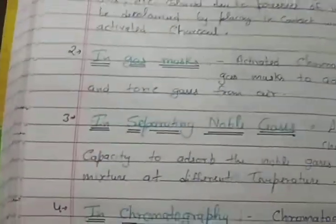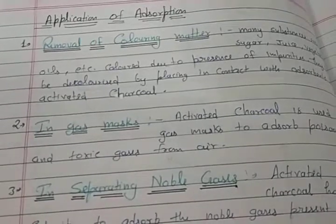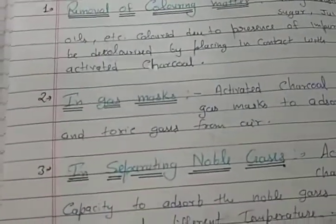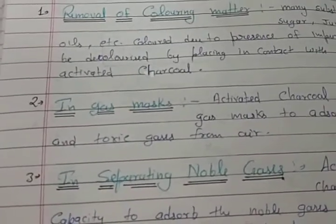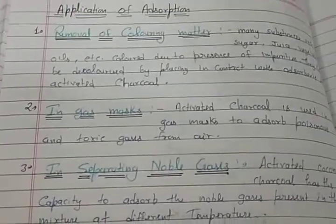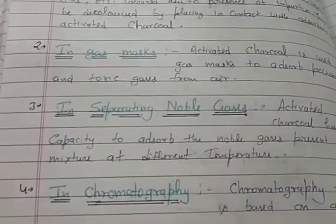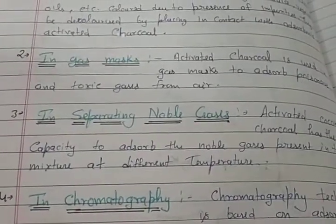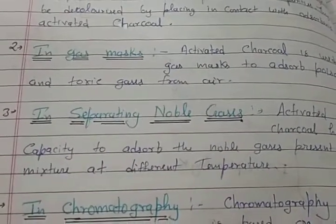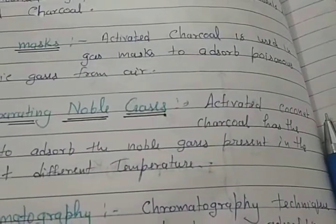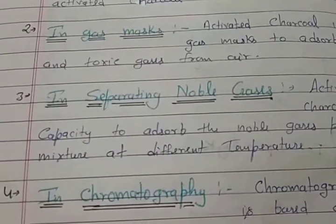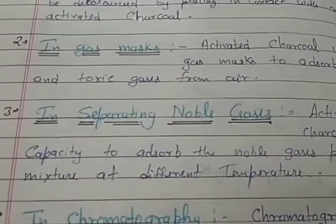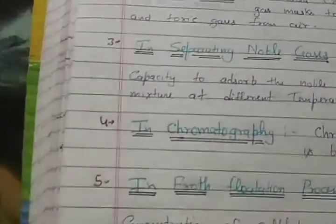Gas masks with activated charcoal filters are also used in mine areas where buildings or mountains are blasted and workers wear masks to prevent particles from entering. Third, in separating noble gases — activated coconut charcoal has the capacity to adsorb noble gases on its surface. Note that radon is excluded since it is a radioactive element and does not get adsorbed.